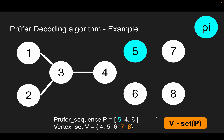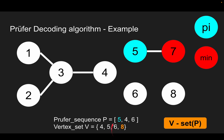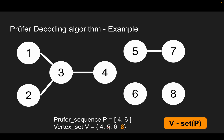Next iteration, pi is 5. The smallest element in the yellow set is 7. We connect the smallest one with pi. We remove the smallest one from V and remove pi from P. After removing pi from P, since 5 no longer exists in P, we add 5 as a member of the yellow set.